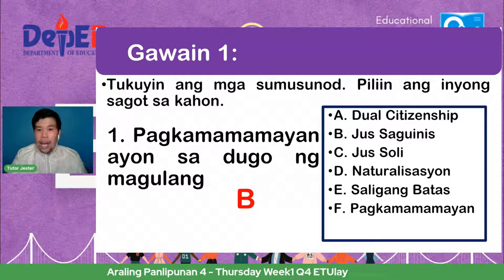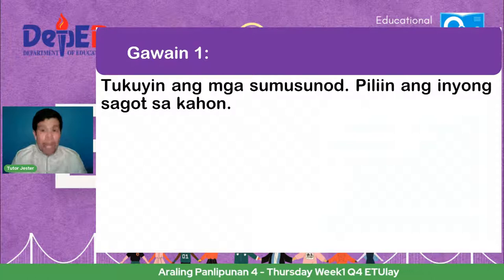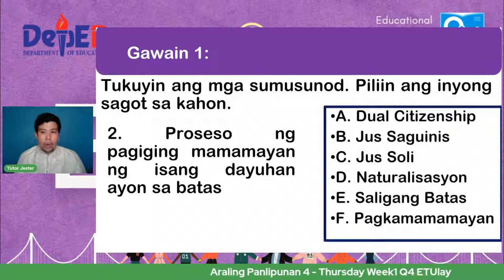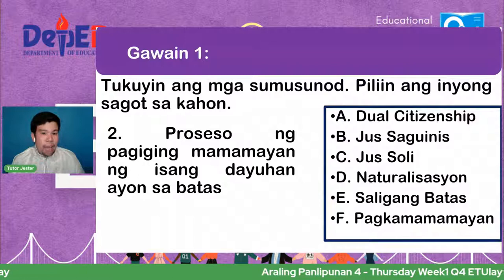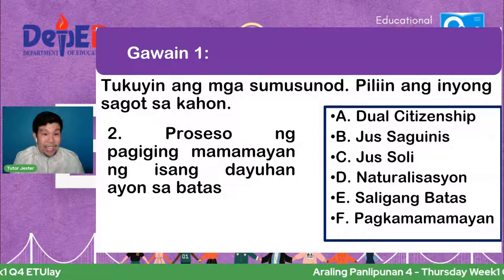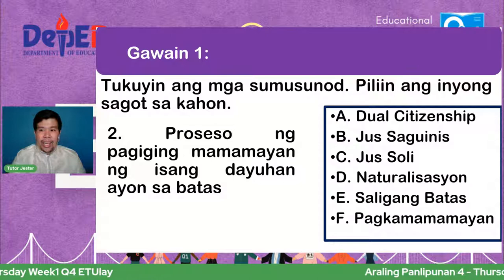Ikalawang bilang — proseso ng pagiging mamamayan ng isang dayuhan ayon sa batas. Ang pagpipilian: A — dual citizenship, B — jus sanguinis, C — jus soli, D — naturalisasyon, E — saligang batas, F — pagkamamamayan. Ayon kina Alexander at Ayesha, ang kasagutan ay D. Ang tamang sagot ay letter D — naturalisasyon. Palakpakan ang inyong mga sarili!